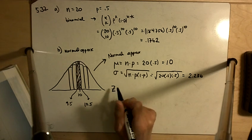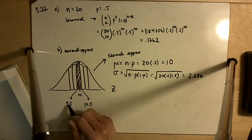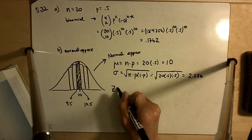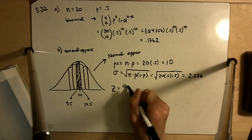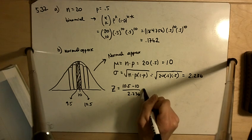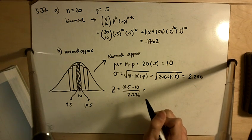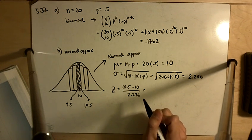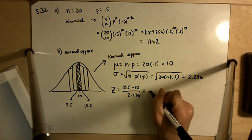So now we're going up to 10.5 and down to 9.5. Z on the 10.5 side is going to be 10.5 minus 10 divided by 2.236, and there you get a positive 0.22.